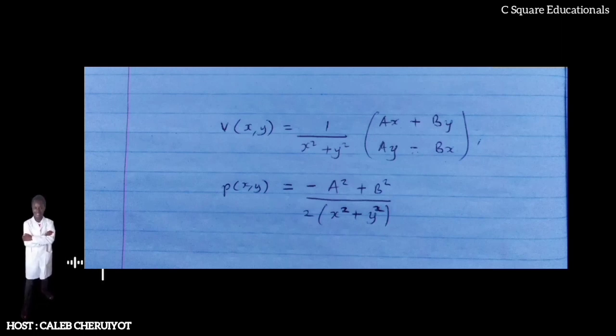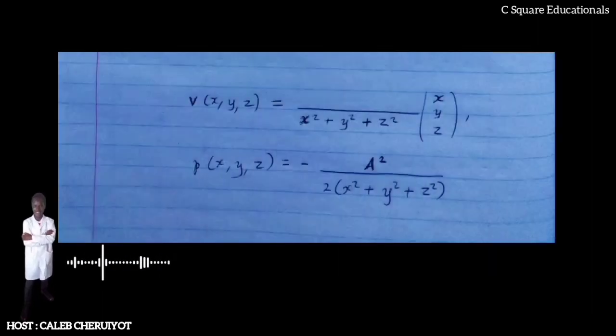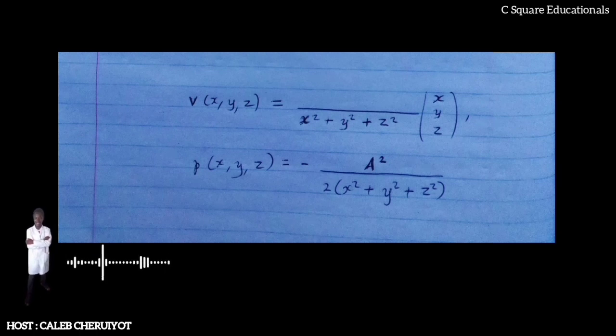Let us look at a three-dimensional example. In the case of an unbounded domain with three-dimensional incompressible stationary and with zero viscosity, ν = 0, radial flow in Cartesian coordinates (x, y, z), the velocity vector V and pressure P are V(x,y,z) and P(x,y,z) as shown. There is a singularity at x = y = z = 0.